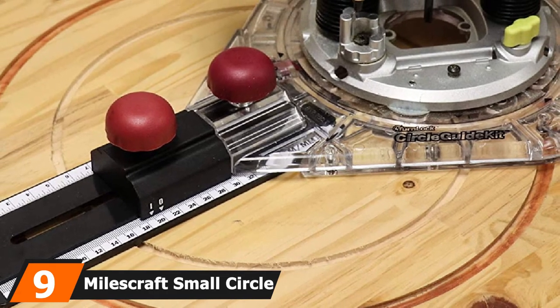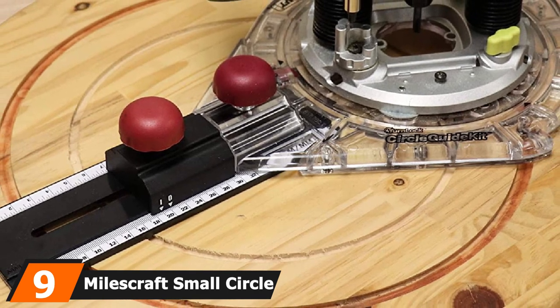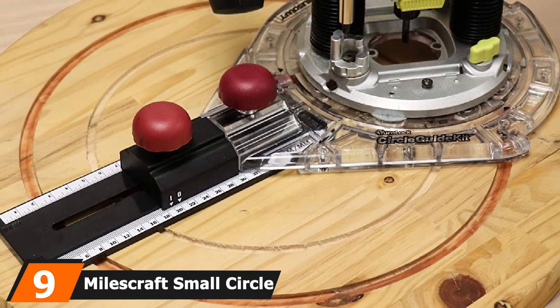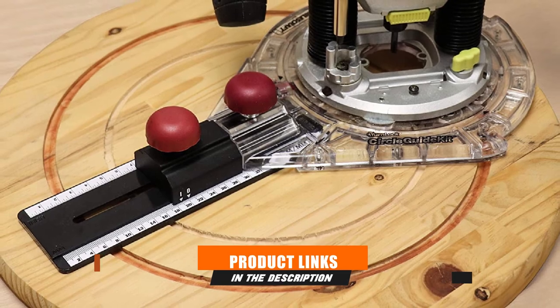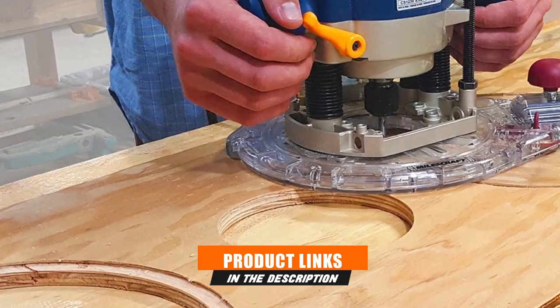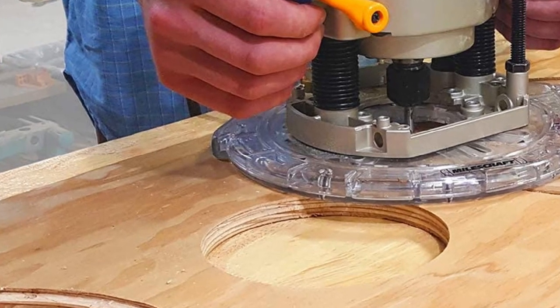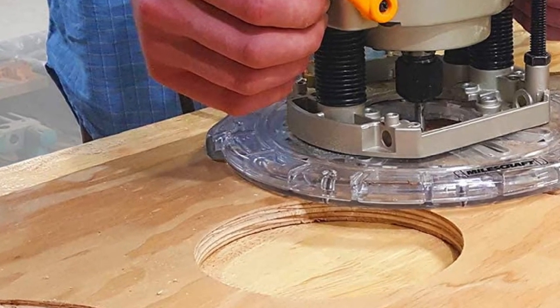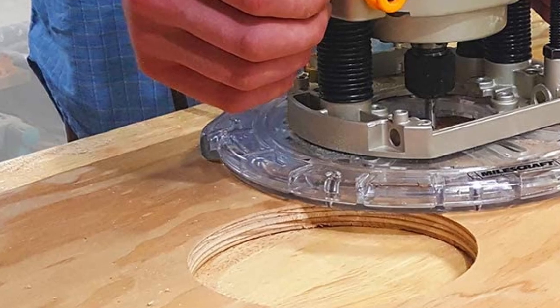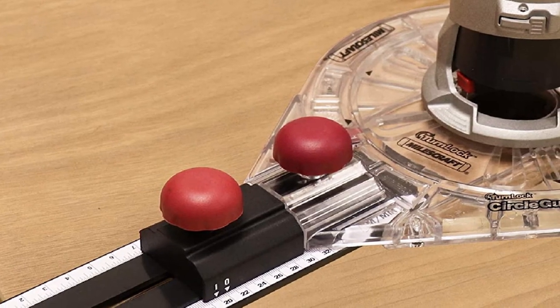Next at number 9, we have Milescraft Small Circle Compass Jig. Looking for a jig to cut some round shapes, why fuss? Milescraft 1210 Small Circle Compass can do your work with ease and it is perfect as a router circle cutting jig. This compass shaped jig comes with built-in metric and imperial scales to make accurate marking for precise cuts.